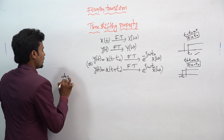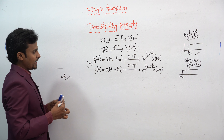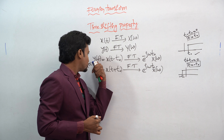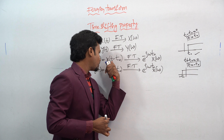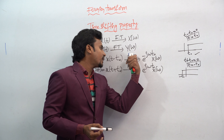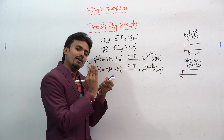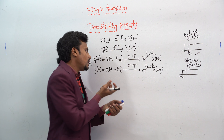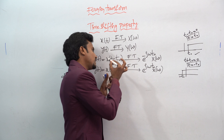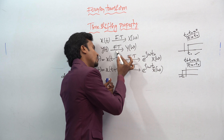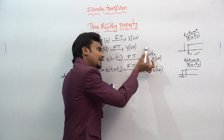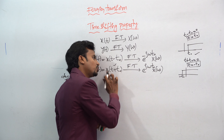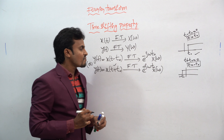Here is a shortcut: whenever you have y(t) = x(t - t₀) and apply the Fourier transform, observe the sign. If you have a minus symbol in the time domain, you directly replace it with a minus symbol in the exponent. If you have a plus symbol, you directly replace it with a plus symbol in the exponent.